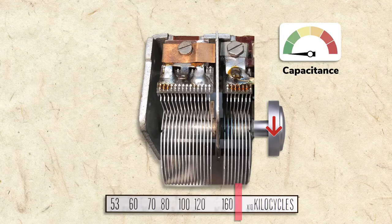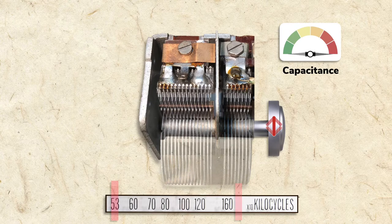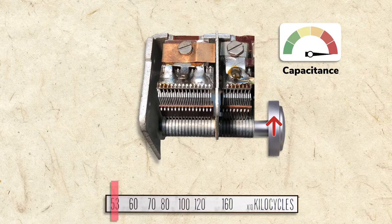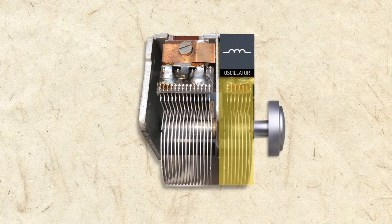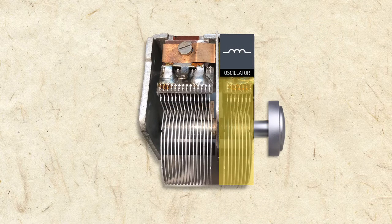So the lower the capacitance, the higher the frequency, and the higher the capacitance, the lower the frequency. And since the oscillator is also being tuned by the variable condenser, its frequency is adjusted in the same way.